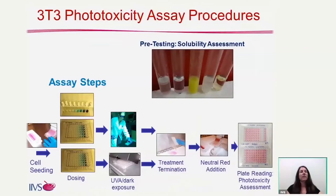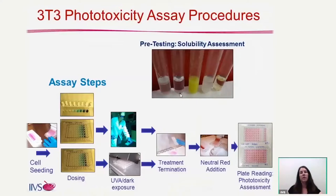Here are the phototoxicity assay procedures in brief. At the end of my talk, I have a video that will actually walk through all of these procedures in greater detail. We're going to start out with a pre-testing solubility assessment, where we select the most appropriate solvent. We can have different conditions: a biphasic suspension, test article that's floating, test article stuck to the sides of a tube, a homogeneous suspension, and finally a true solution. In general, we try to work with only homogeneous suspensions or true solutions. For insolubles, I'll talk later about a three-dimensional assay where we can look at those.